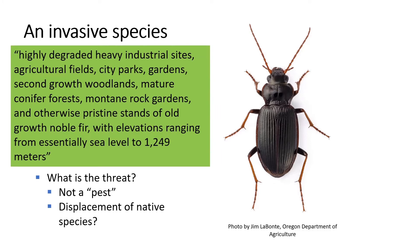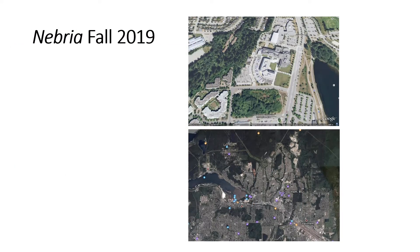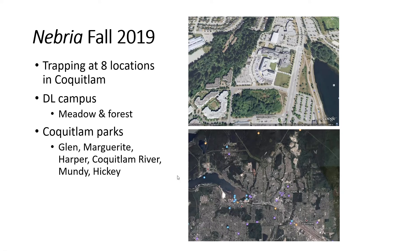We've been checking around in Coquitlam and did some sampling last fall. Our first collections of this beetle were in 2018, and we now know there was an introduction into Vancouver earlier than that — there's one specimen from back in 2015. We looked around eight locations in Coquitlam, trapping at the David Lamb campus meadow and forest habitats, and six Coquitlam parks. What we found last fall is that it was established in four different locations in Coquitlam, so it's definitely well established there.